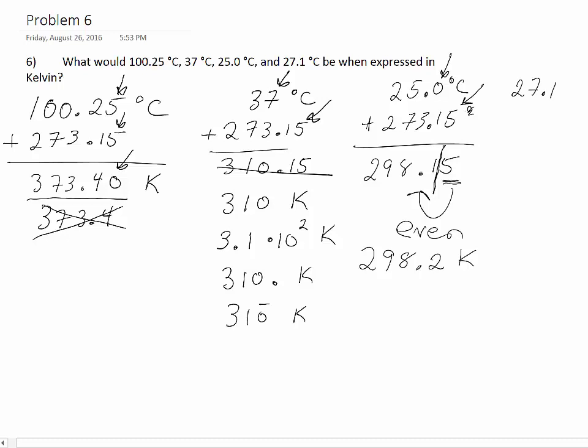Finally, 27.1 degrees Celsius plus 273.15, and that gives us 300.25 Kelvin. Again, we're only precise to the tenths place, so really the only difference between these two is that we already have the even number, and this becomes 300.2 Kelvin.